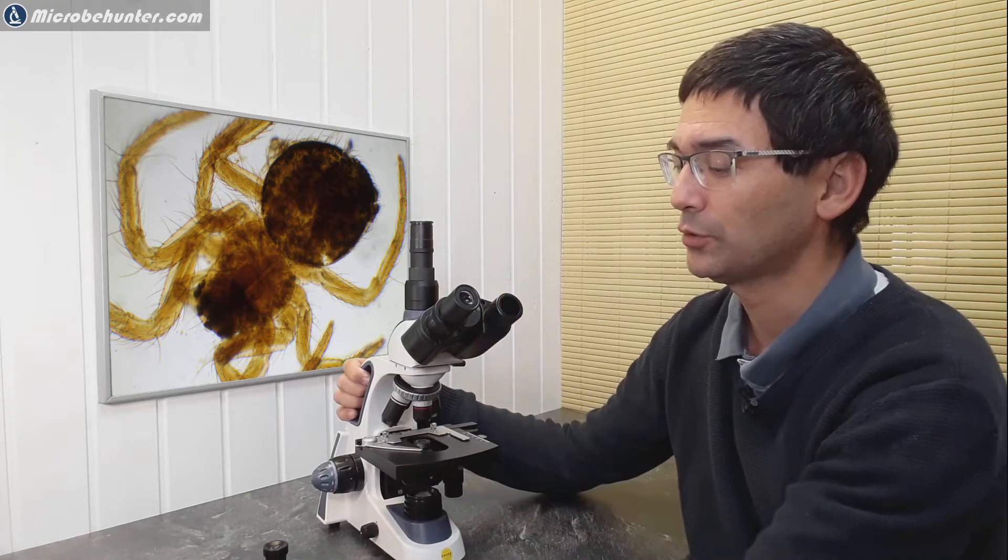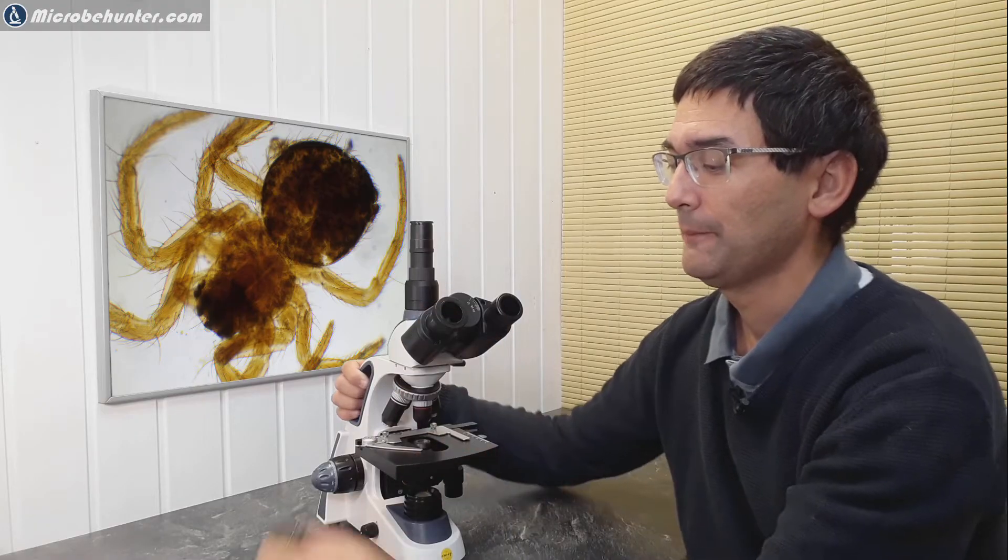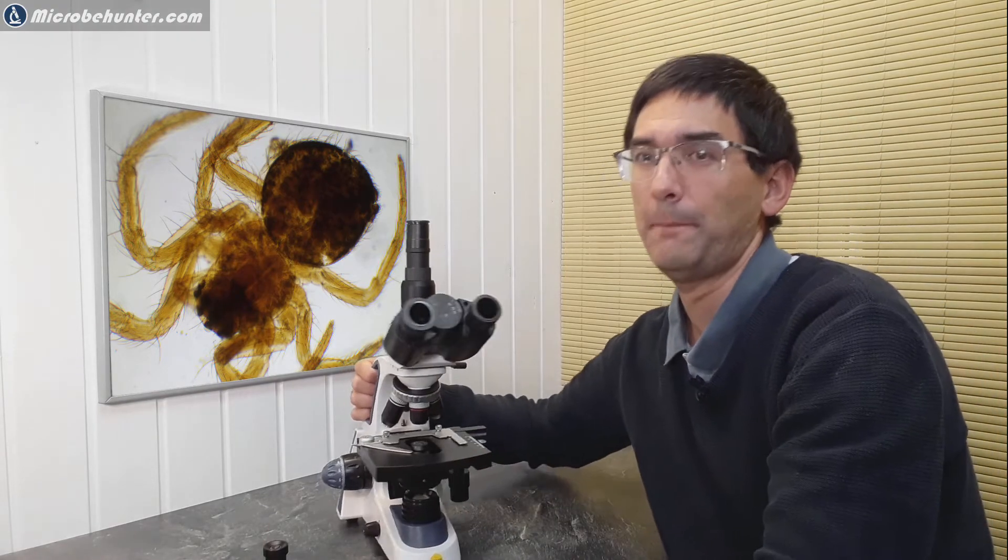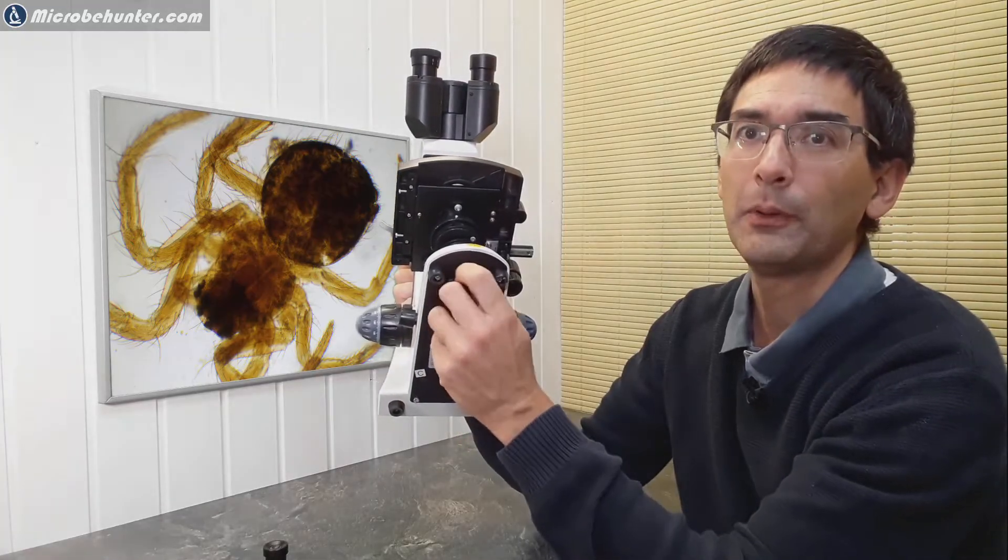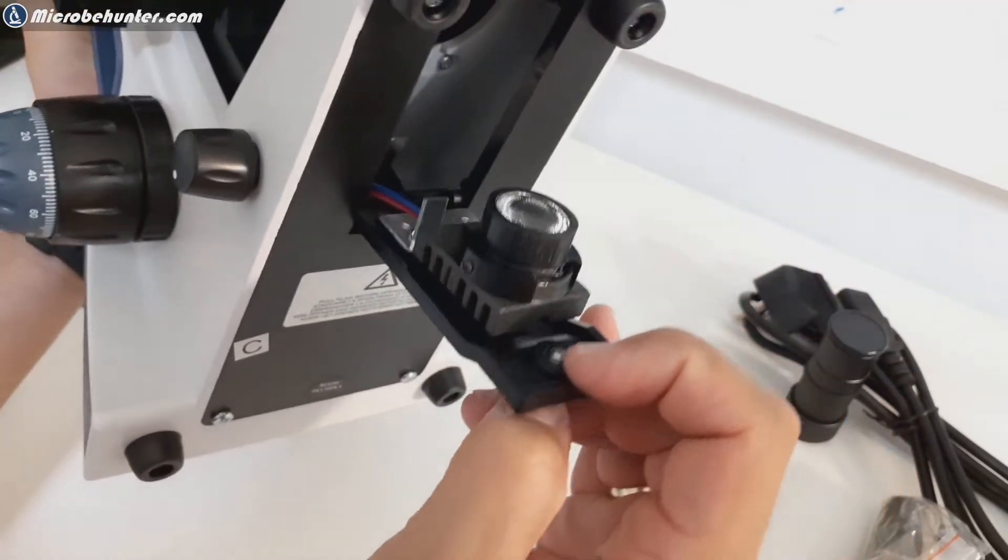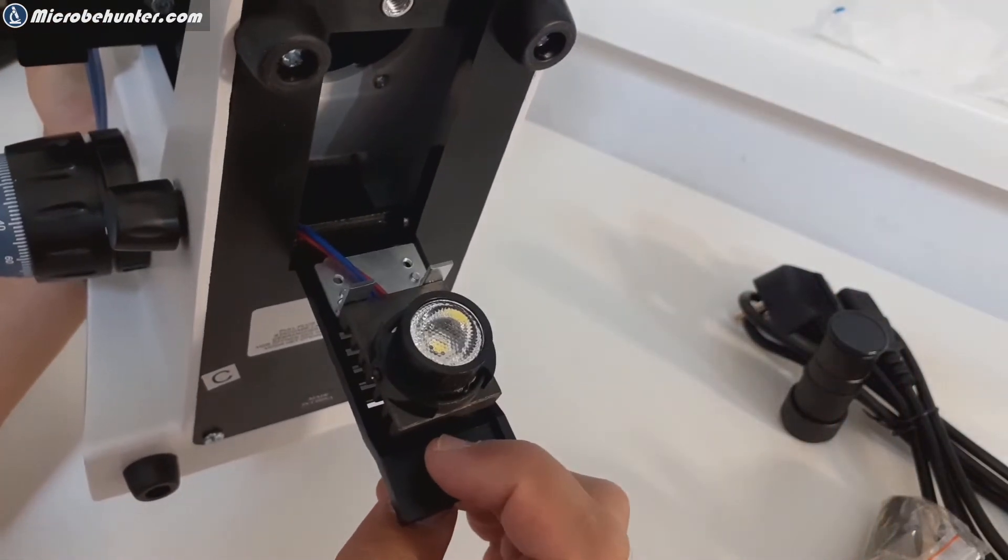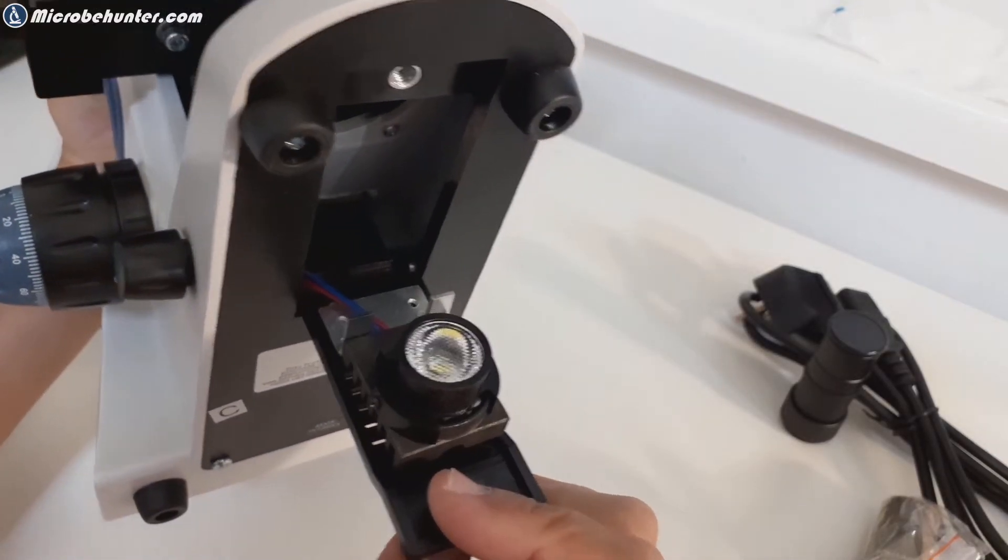If you actually open it up, I have to remove the eyepieces now so I don't want them to fall out. You can actually open up the bottom side of the microscope and then the LED is accessible.